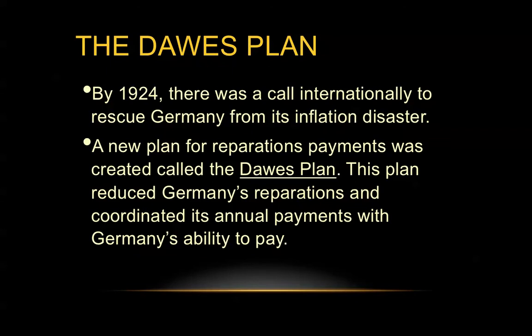In response to this runaway inflation, in 1924 there was an international call to rescue Germany from its inflation disaster. The Dawes Plan was essentially chosen to counteract this runaway inflation. It basically reduced Germany's reparations and coordinated its annual payments with something that Germany actually had the ability to pay, so the German economy wouldn't collapse.